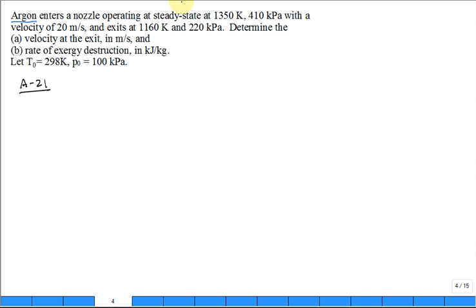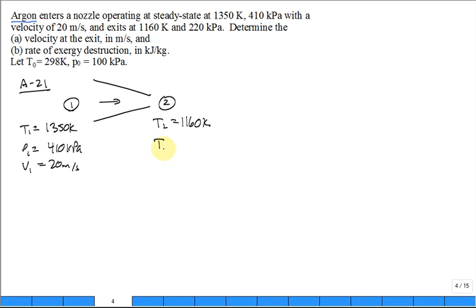Let's jump back to our problem. Argon enters a nozzle operating at steady state. Nozzle typically has the cross-sectional area reduce in the direction of flow, so it speeds up. It comes in at state 1, goes out at state 2. It's operating at steady state and it comes in at a temperature of 1350 Kelvin, 410 kilopascal - so T1 and P1 - and it goes out at a velocity in of 20 meters per second and exits at T2 of 1160 Kelvin and a pressure P2 of 220 kilopascal. Half the time the problem is organizing the information.